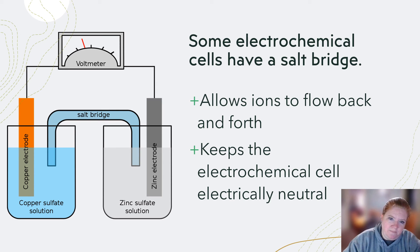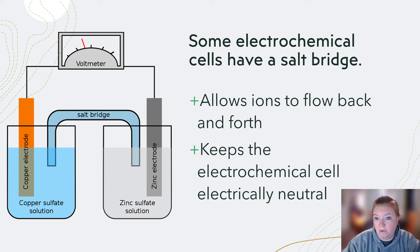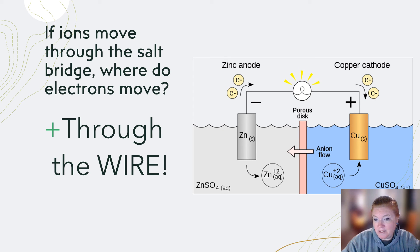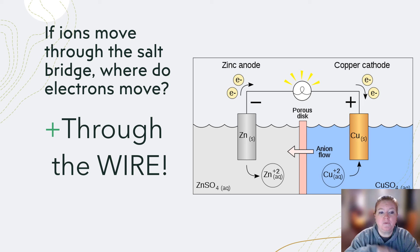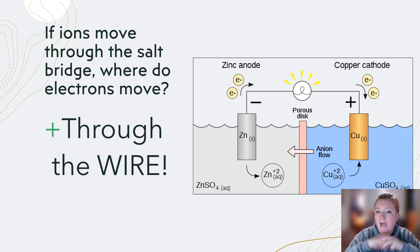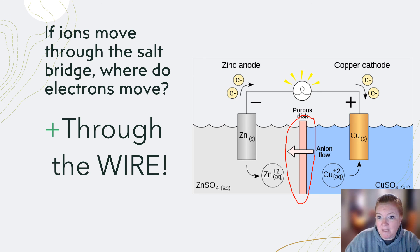Some electrochemical cells have a salt bridge, which allows ions to flow back and forth and keeps the cell electrically neutral so it doesn't get polarized. Ions move through the salt bridge, while electrons move through the wire. If there's no salt bridge, ions can move through a porous disk or simply by being in the same liquid without a divider.